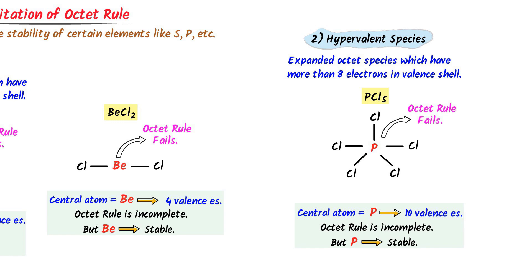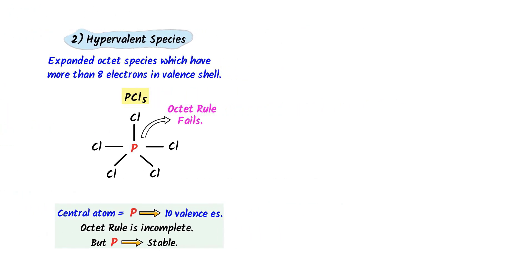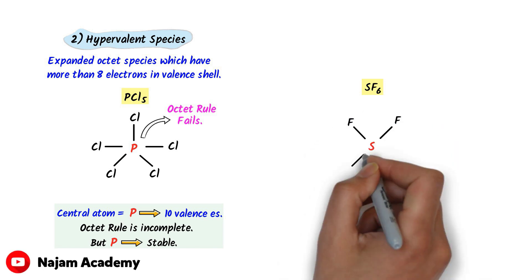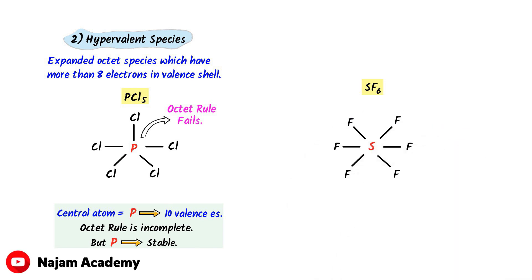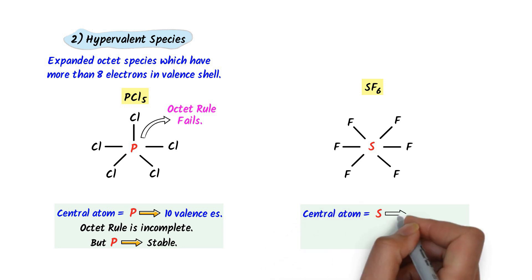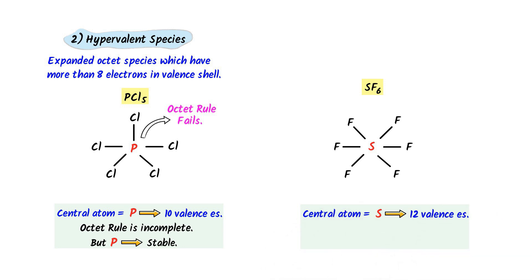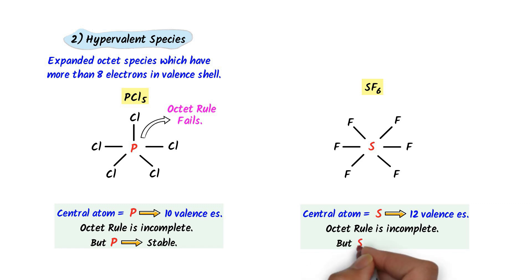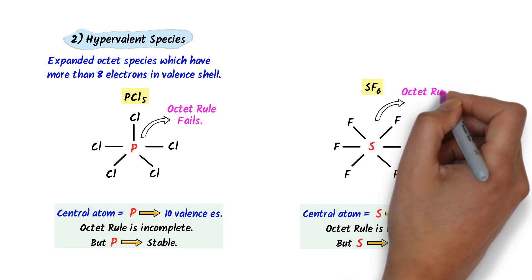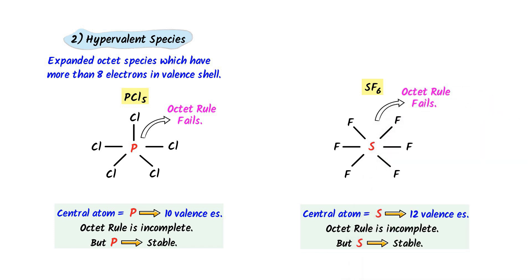Secondly, consider sulfur hexafluoride (SF₆). Sulfur is bonded to six fluorine atoms with no lone pair on sulfur. The central atom sulfur has 12 electrons — more than eight — and does not follow the octet rule, but this hypervalent species is still stable. This is a limitation of the octet rule which cannot explain the stability of SF₆.